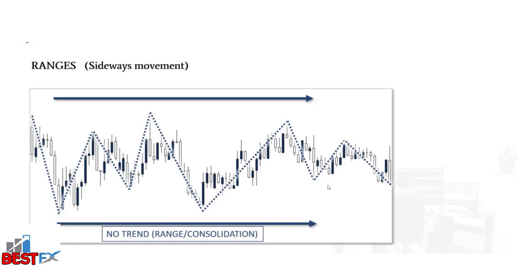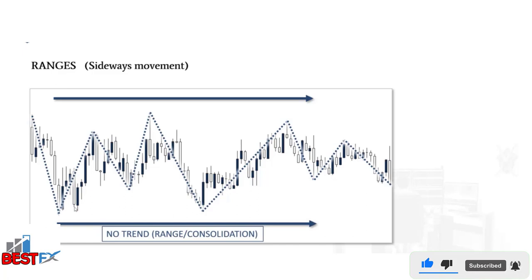Assume bulls or bears come in and say they're taking this instrument either up or down. Until then — until strong new order flow enters the market — the order flow is basically balanced and just moves sideways.